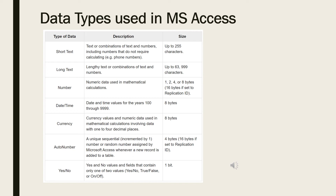Every field in a table has properties which define the field's characteristics and behavior. The most important property for a field is called its data type, which determines what kind of data it can store. The application software we will use is Microsoft Access. For example, the data type short text stores text or combinations of text and numbers — including numbers that do not require calculating, such as phone numbers — with a size of up to 255 characters.